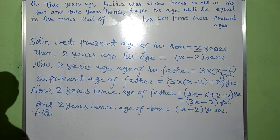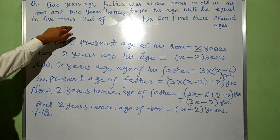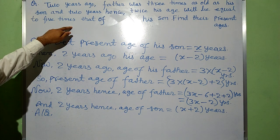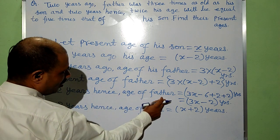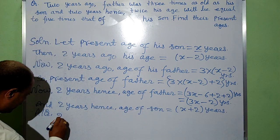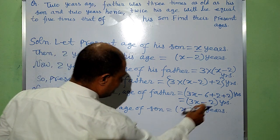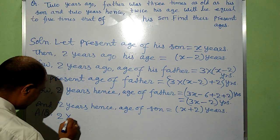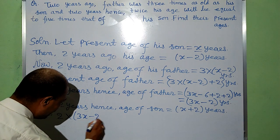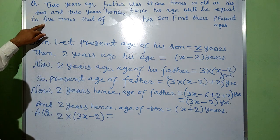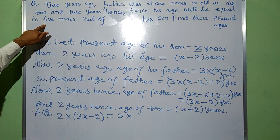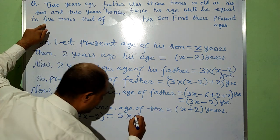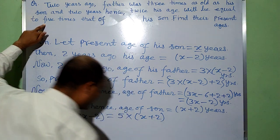According to the question, 2 years hence, twice his age will be equal to 5 times that of his son. So twice the age of father — according to question, 2 into age of father (2 years hence), that is 2 into (3X minus 2), will be equal to 5 times the age of his son. Age of son is X plus 2.